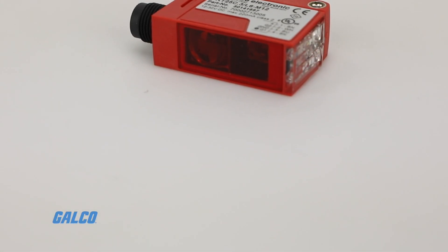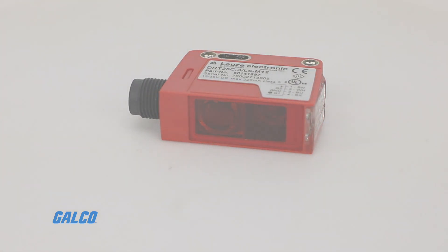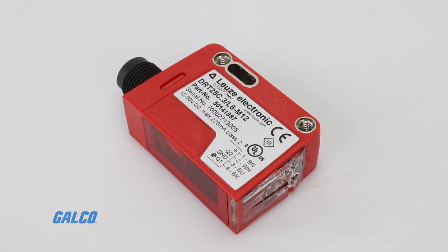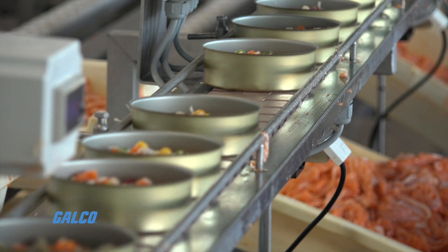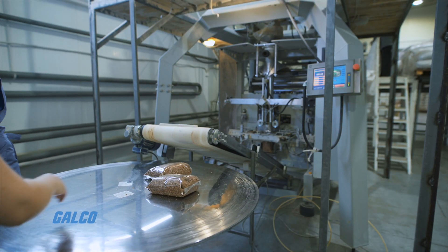The DRT25C from Leuze is a dynamic reference diffuse sensor that is specifically designed for detection of products that use conveyors in production, mainly in confectionery and baked good processing.